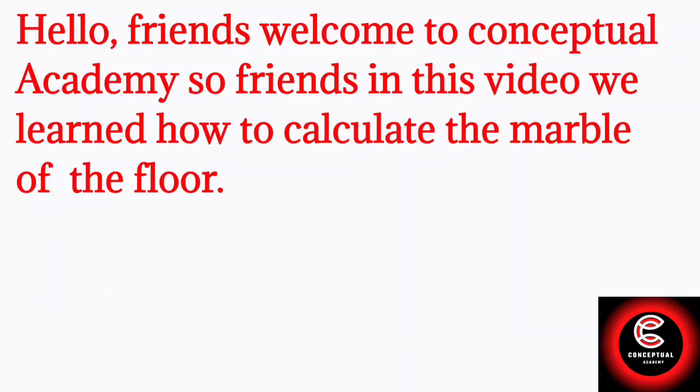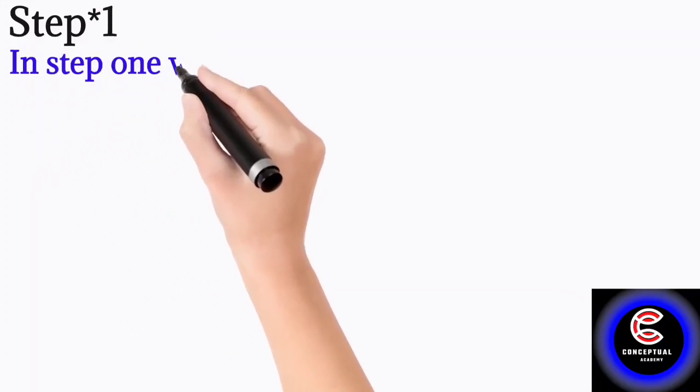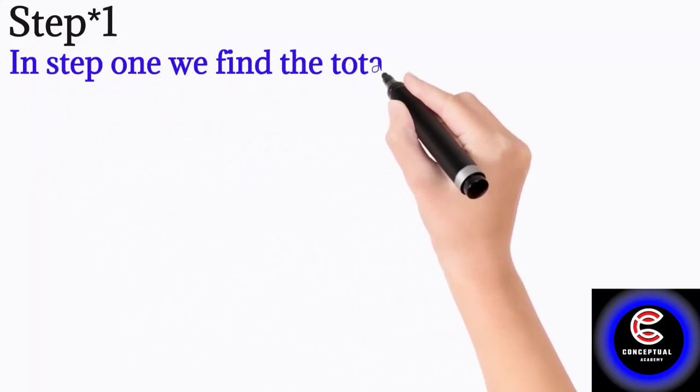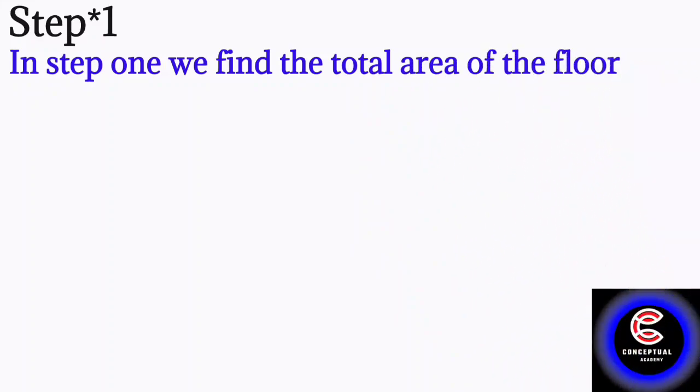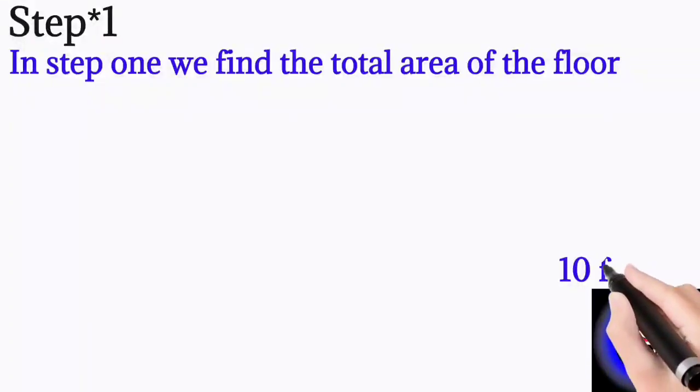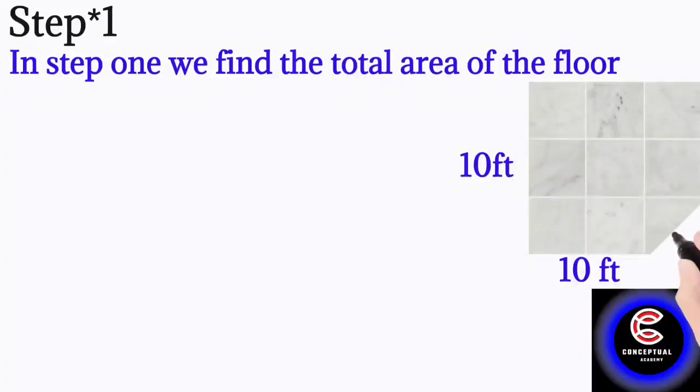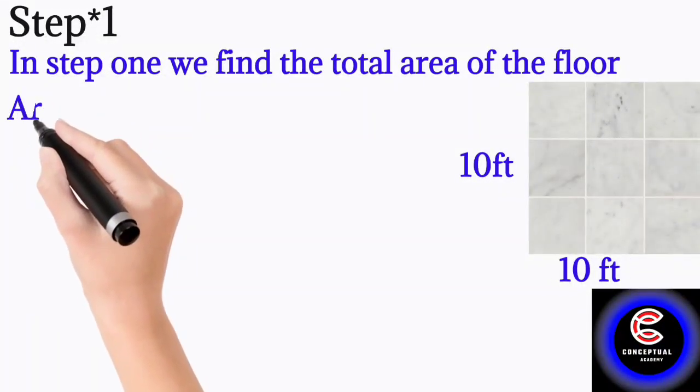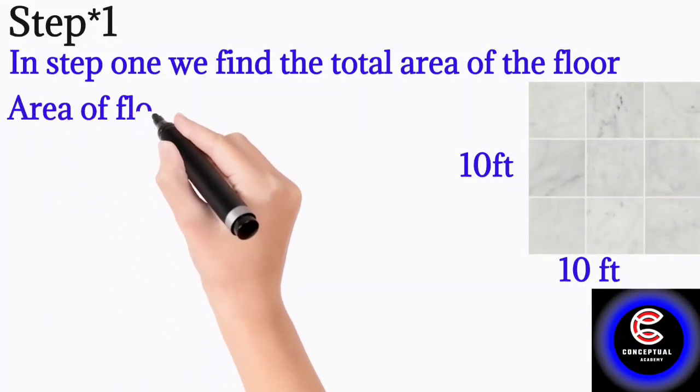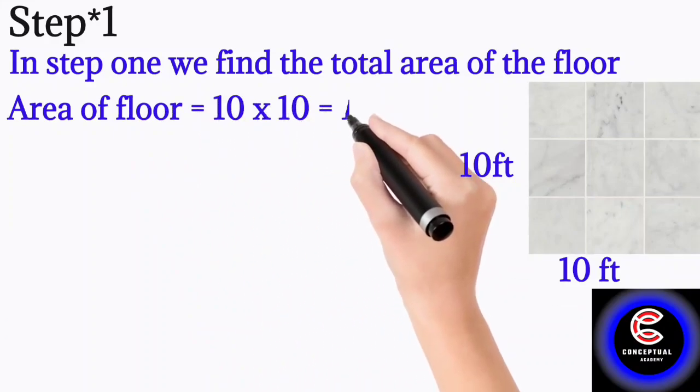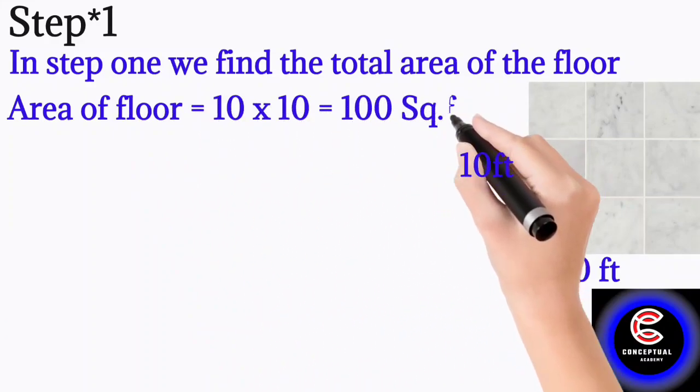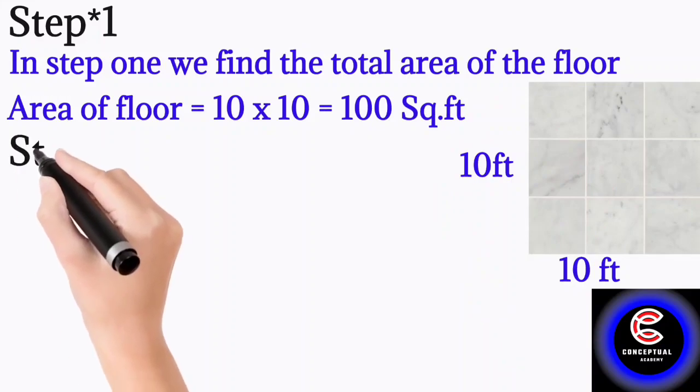Without any time wasting, let's start the video. In step number one, we find the total area of the floor. So we have a floor, one side of floor is 10 feet, the other side is also 10 feet. So area of floor is 10 x 10 = 100 square feet.